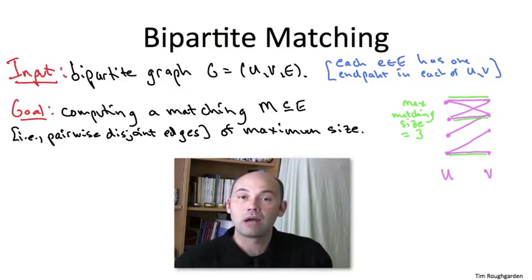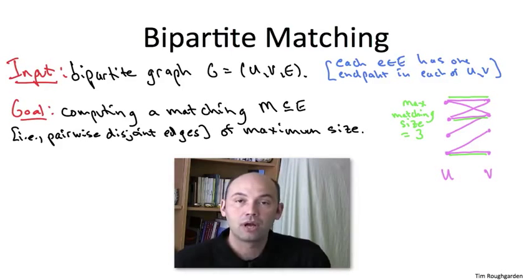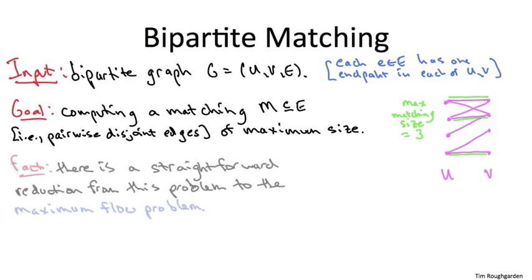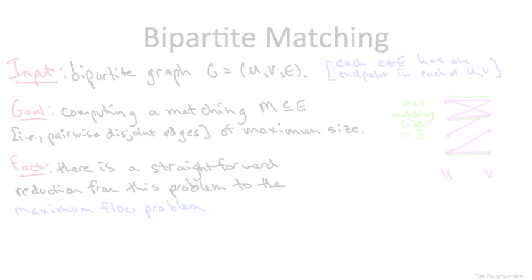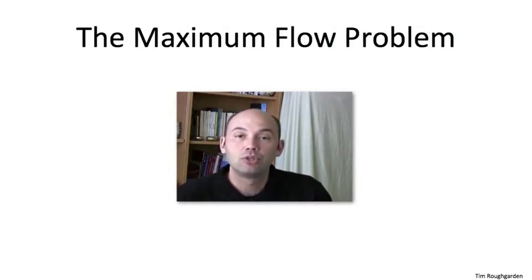So in non-bipartite graphs, you have to work pretty hard to solve the problem in polynomial time. The bipartite case that I'm talking about here reduces easily to another problem you should know about, called the maximum flow problem. So I'll now move on to describing the maximum flow problem. I'll leave it as a good exercise for you to do: why bipartite matching reduces to maximum flow.